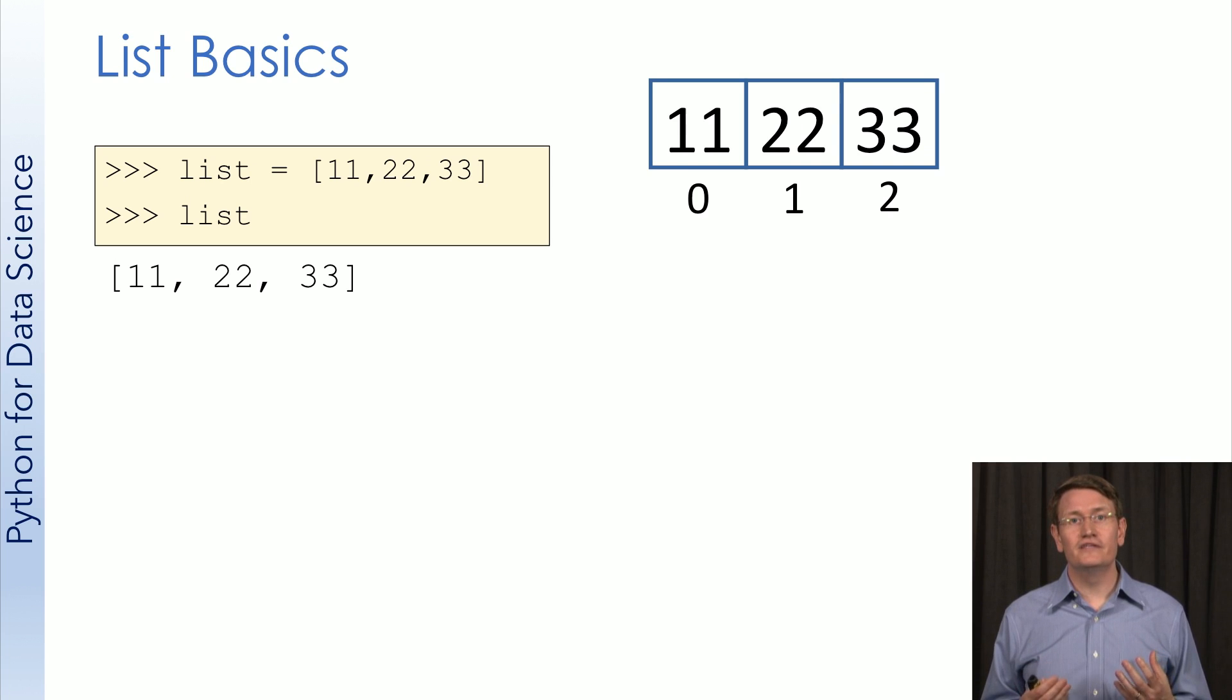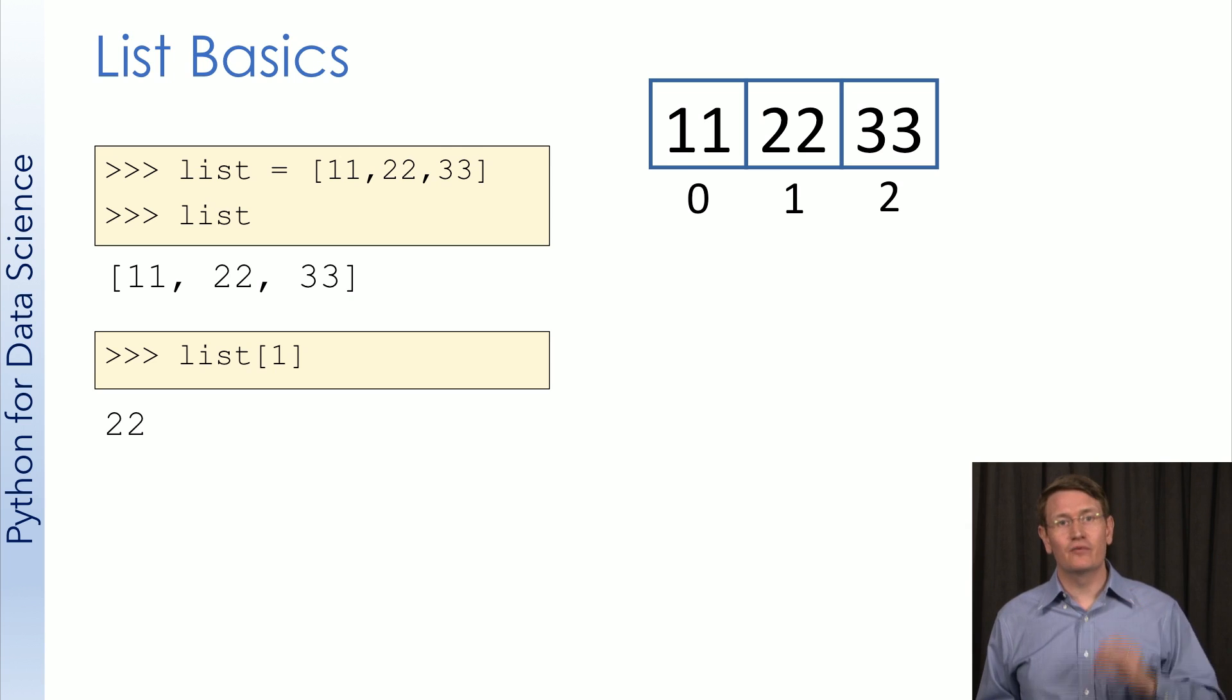Here's a visual representation of our list in memory. Based on this, if I ask for the element at index 1, I should get back 22. And that's exactly what happens.